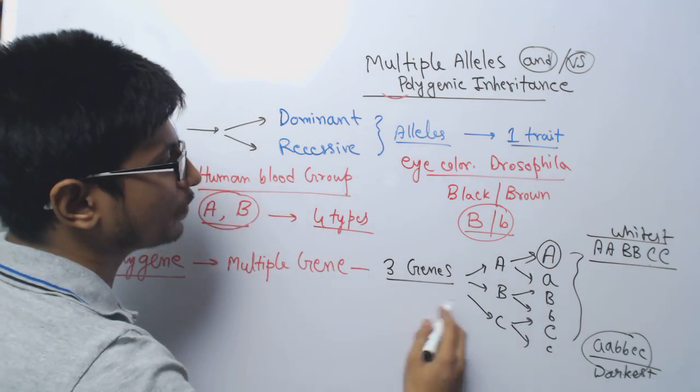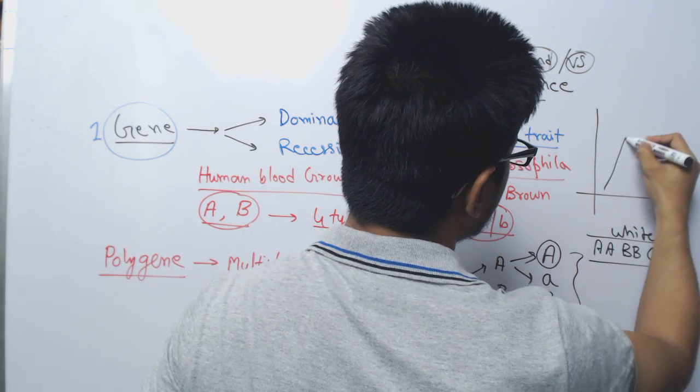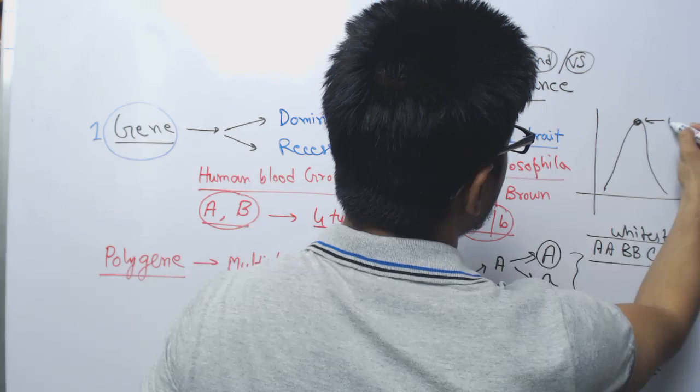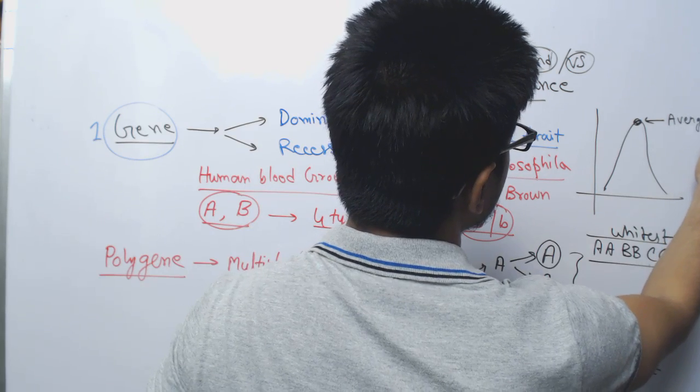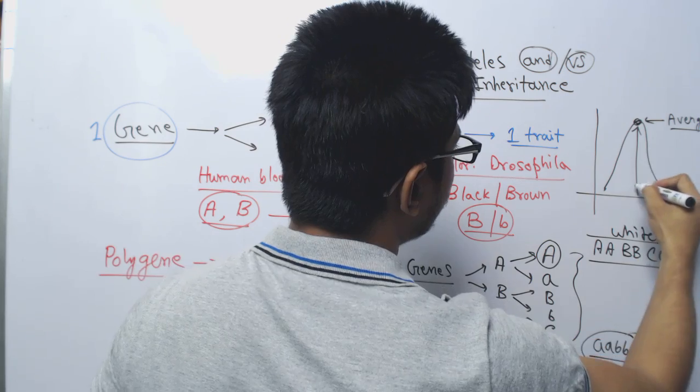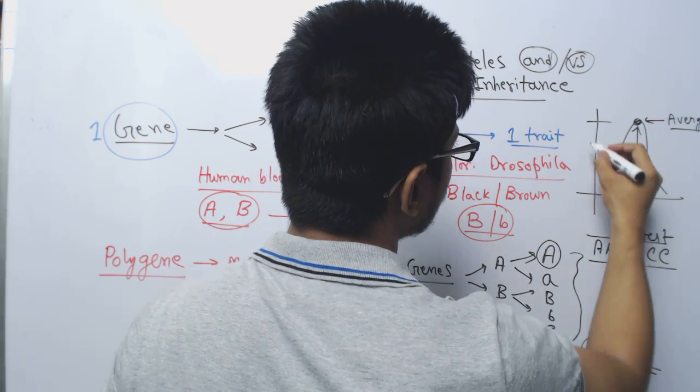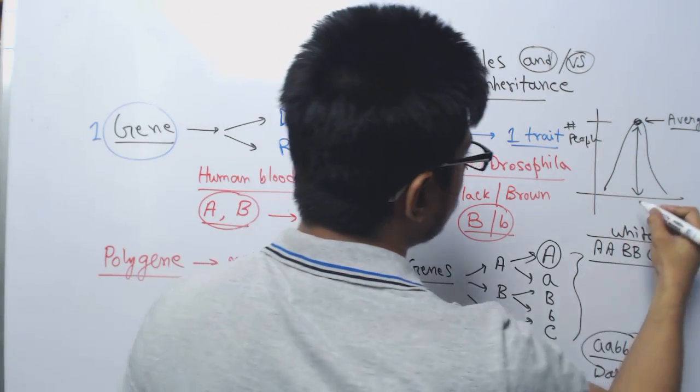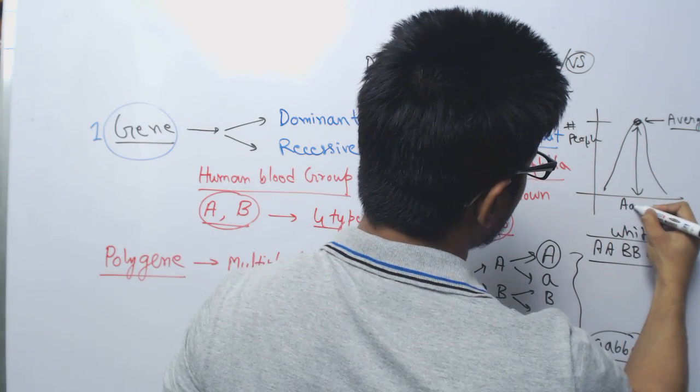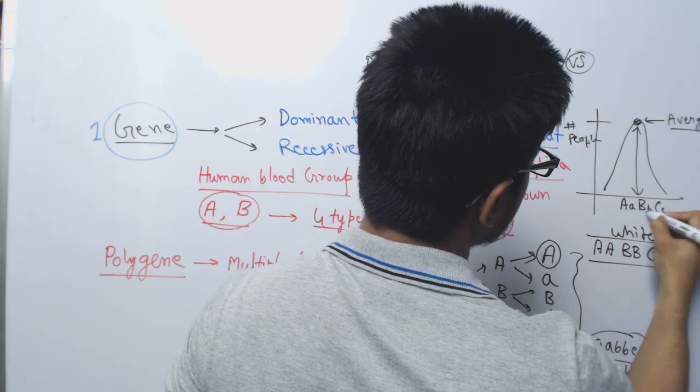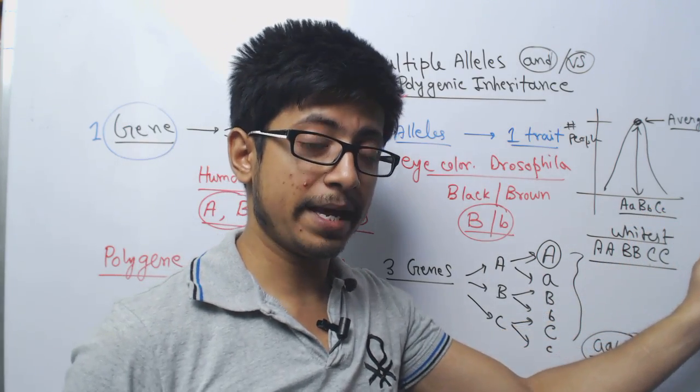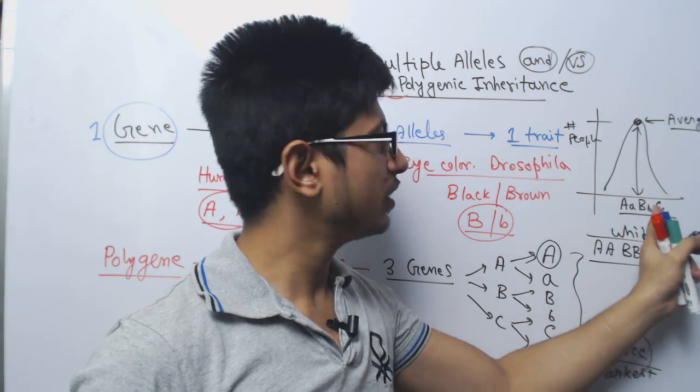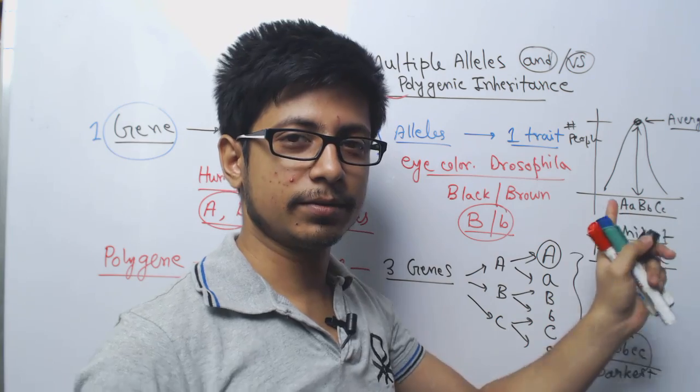If you plot the graph of a polygenic inheritance, it will form a bell-shaped curve where most people will contain the average skin tone. This is the number of people. The population will get the average skin tone and that is capital A, capital B small b, capital C small c. This is the stabilizing type of selection. The most predominant form will be the average one, a combination of both.